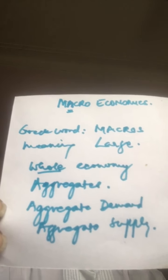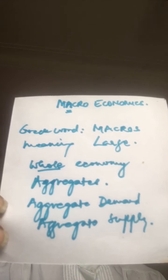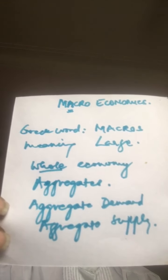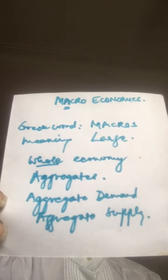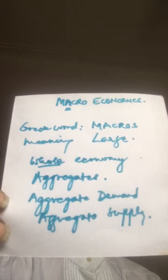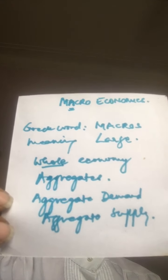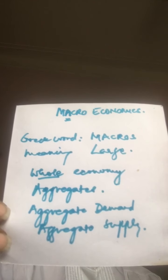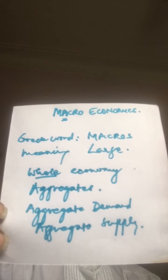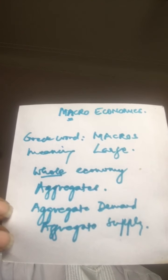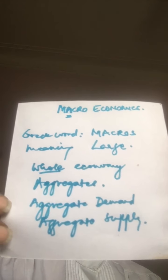The scope of macroeconomics includes the theory of income and employment, the general price level, theory of economic growth and development, and sustainable growth — that is, growth in keeping with the needs of future generations. We also study the theory of international trade, all under macroeconomics.